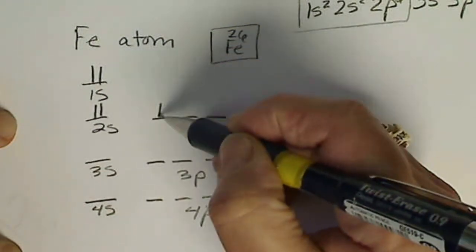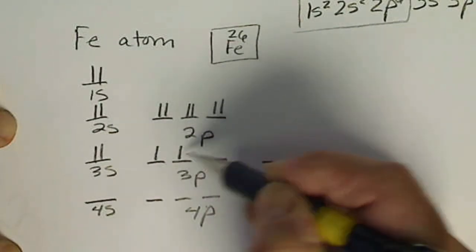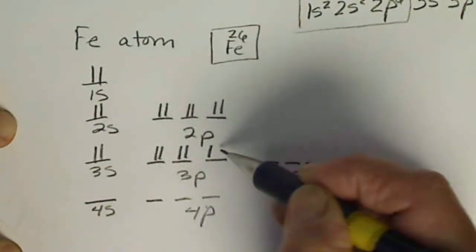With 26 electrons, I'm not going to put the arrows on here just to get through a little quicker. Counting: 11, 12, 13, 14, 15, 16, 17, 18.